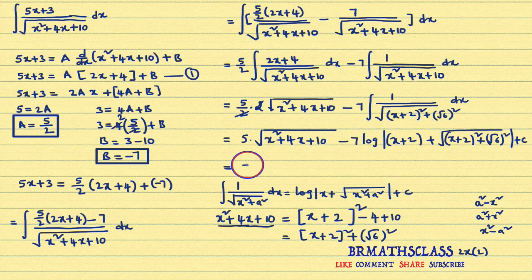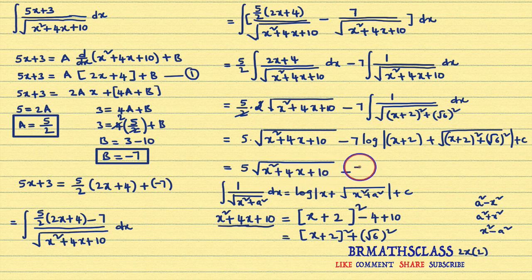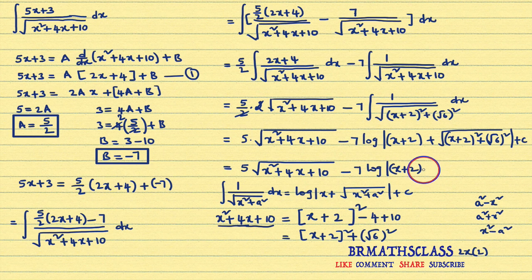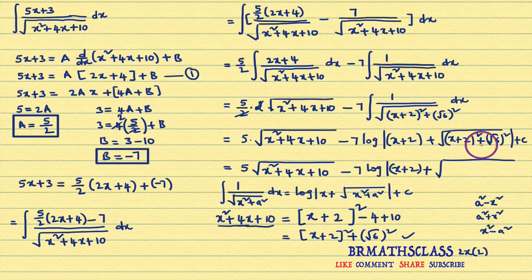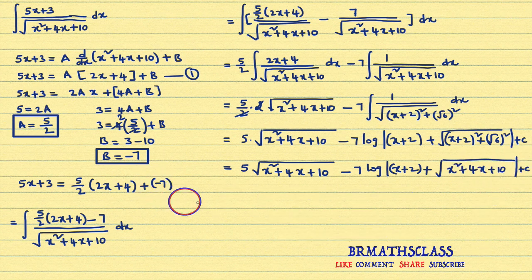Putting it all together: that equals 5 into square root of x square plus 4x plus 10, minus 7 into log mod x plus 2 plus square root of x square plus 4x plus 10, plus c. Note that x plus 2 whole square plus root 6 whole square is nothing but x square plus 4x plus 10. These problems are straightforward with a little practice. If you practice 2 to 3 problems of the same type, you will find them very easy.